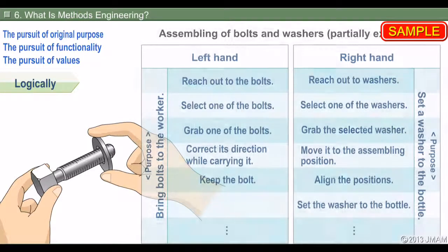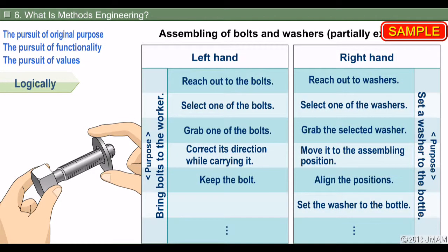For example, break down the assembly of bolts and washers, and check if each motion is directly related to the original purpose of the work. Motions that are not directly related to the purpose can be omitted through innovation. Seeing and thinking efficiently means eliminating unnecessary motions in this way.